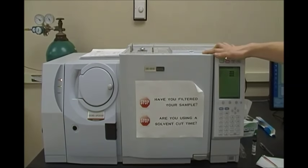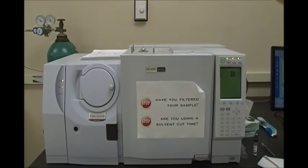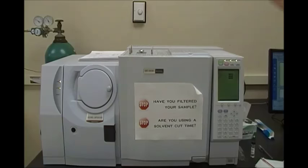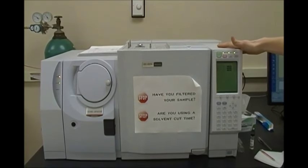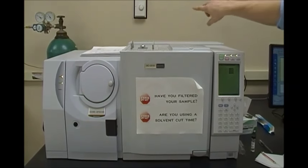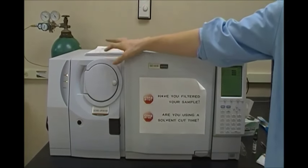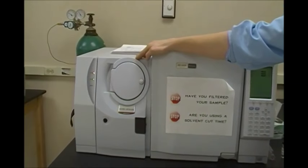Our mobile phase is going to be helium gas, which is in that tank back there. So the helium gas will push our sample through our stationary phase. It'll go through our coiled column and then exit here, coming to the mass spec.